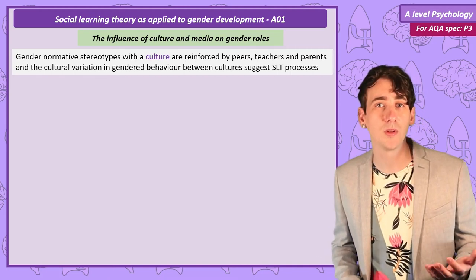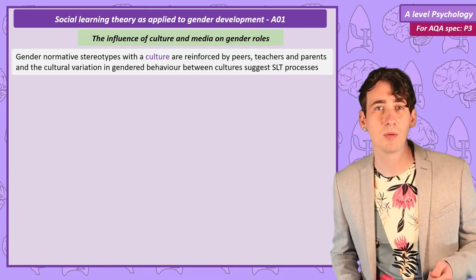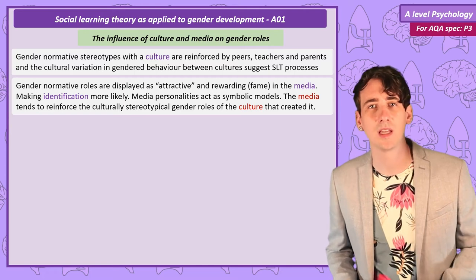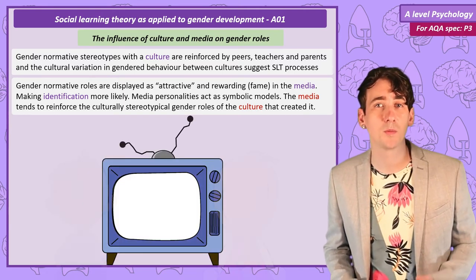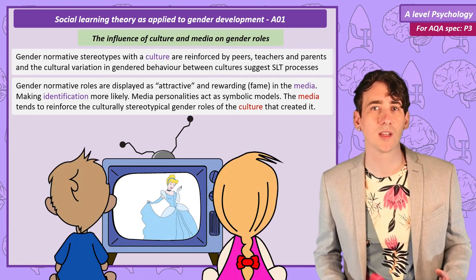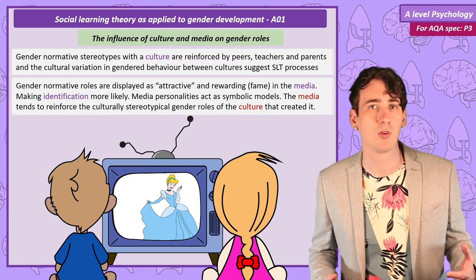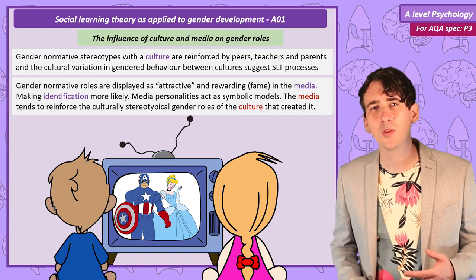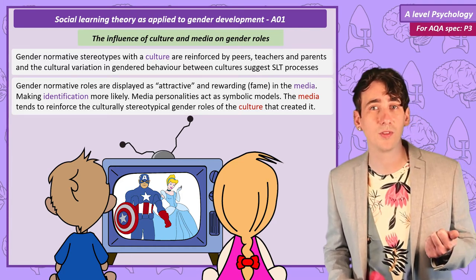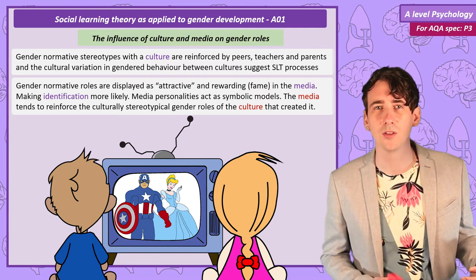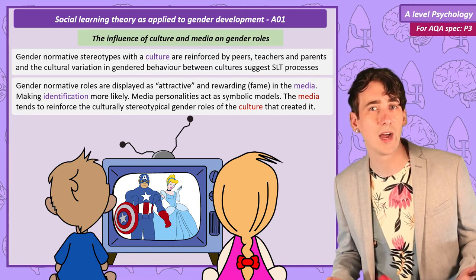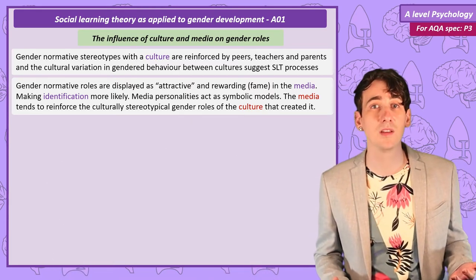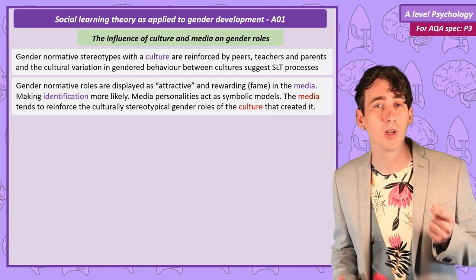Symbolic models are what we see in the media, and the role of the media in shaping people's values is thought to be pretty significant. If normative gender roles are displayed as attractive, we're more likely to want to imitate them. Think about what happens in movies aimed at kids — often it's the pretty princess who is rewarded by being saved by a prince and living happily ever after, while a strong male superhero uses justified violence to save the day and is praised by society. Is this teaching little girls that fitting a beauty standard and being dependent on males is most important, while telling little boys that aggressive violence is justifiable and others will be grateful? Media also varies between cultures and is often a reflection and reinforcement of that culture's beliefs.